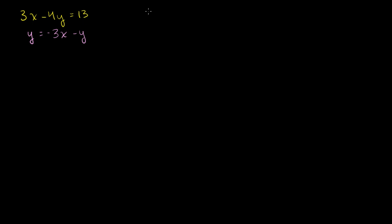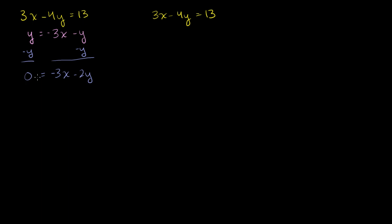Let me rewrite the top equation: 3x minus 4y is equal to 13. Now let me rearrange the bottom equation. If I subtract y from both sides, it becomes 0 is equal to negative 3x minus 2y, or negative 3x minus 2y is equal to 0. That looks nice because I have a negative 3x here and a positive 3x in the top equation — well-suited for elimination.